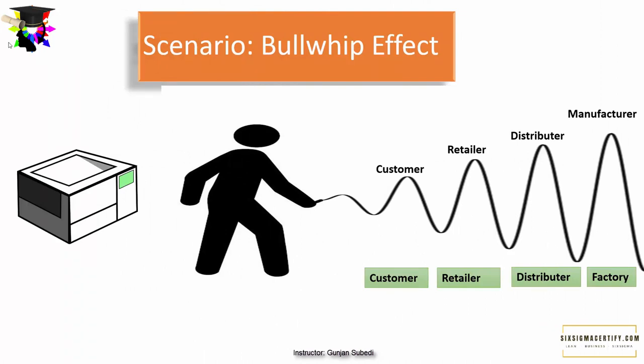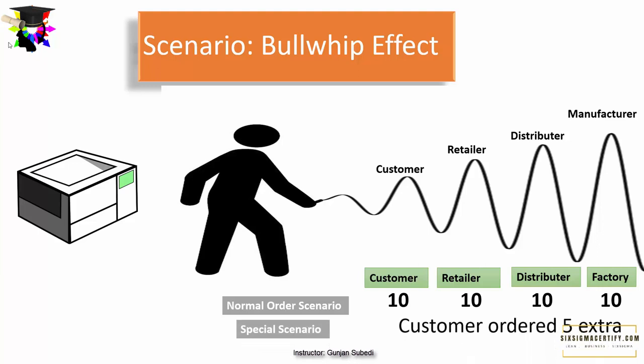Let's suppose there is a constant need of 10 photocopy machines per month from a certain retailer. Meanwhile, a new printing press was established in town and it wanted 15 photocopy machines — the customers ordered 5 extra machines. The retailer asked the distributor for 15 photocopy machines. The distributor provided 15 but the next month forecasted demand could be around 15 machines based on the earlier months.